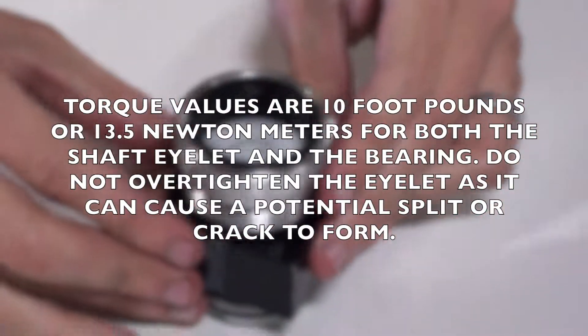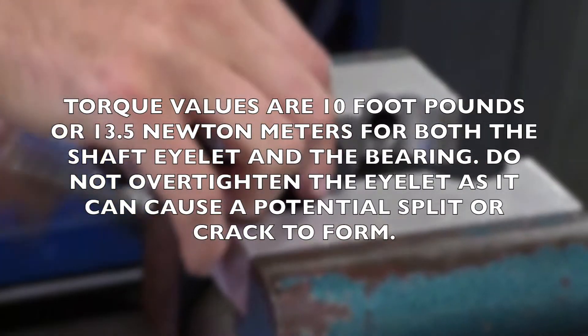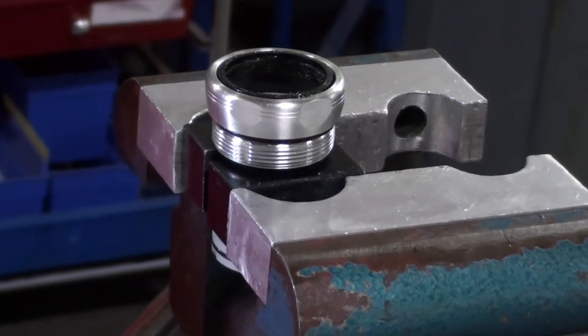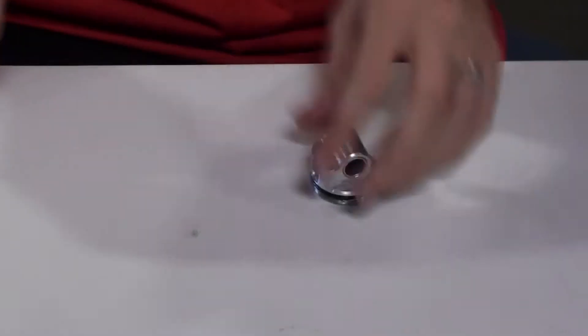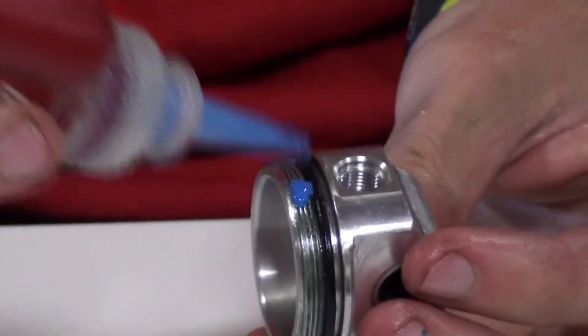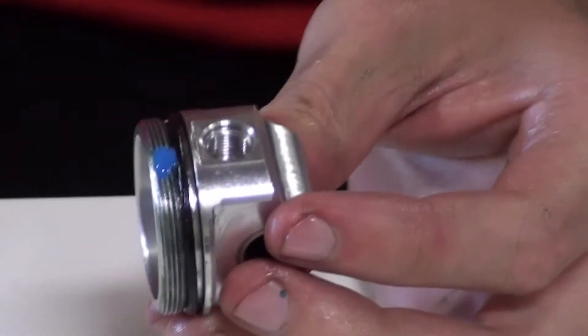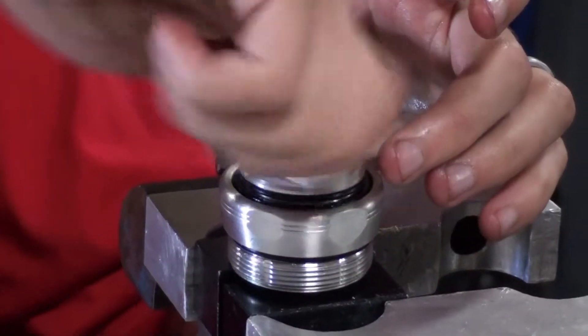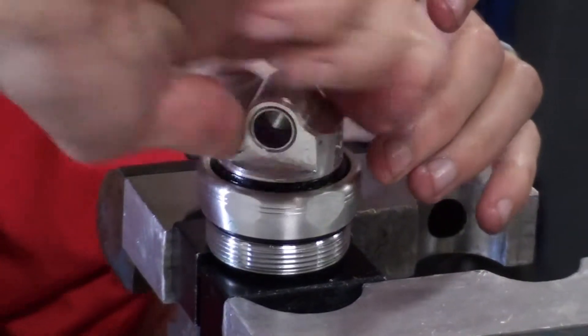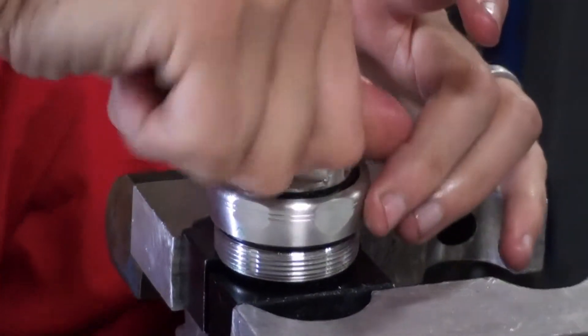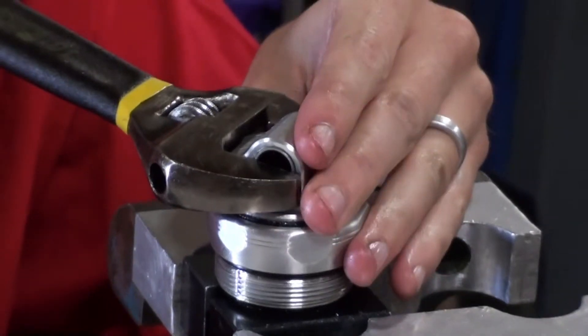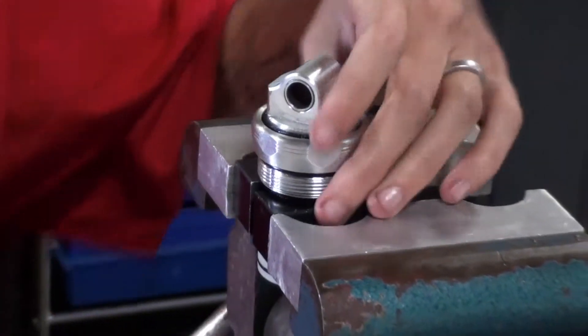Use the shaft clamps once again, and the vise. Use a small amount of blue Loctite on your eyelet. Tighten this crescent wrench. Remove from your vise.